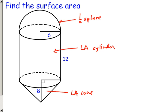The half of a sphere, half of the surface area of a sphere is half of 4πr². The lateral area of a cylinder is 2πr times the height, and the lateral area of a cone is π times the radius times the slant height.